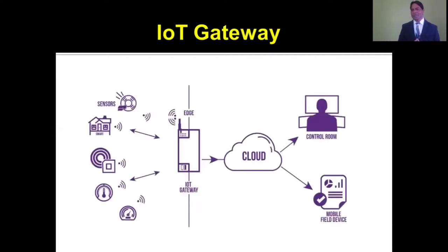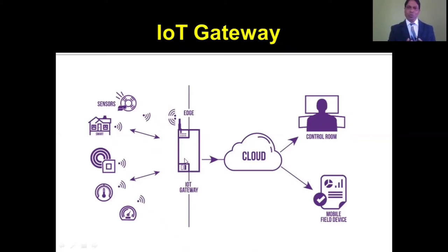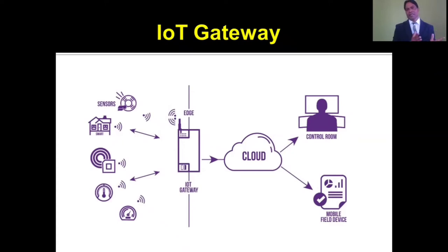In the picture we can see where the IoT gateway sits. These are the sensors, and this is the second stage where we have the edge and IoT gateway. We show the second and third stages separately, but this is just one stage. For the sake of simplicity we categorize them, but the second and third stages can lie in the same place.